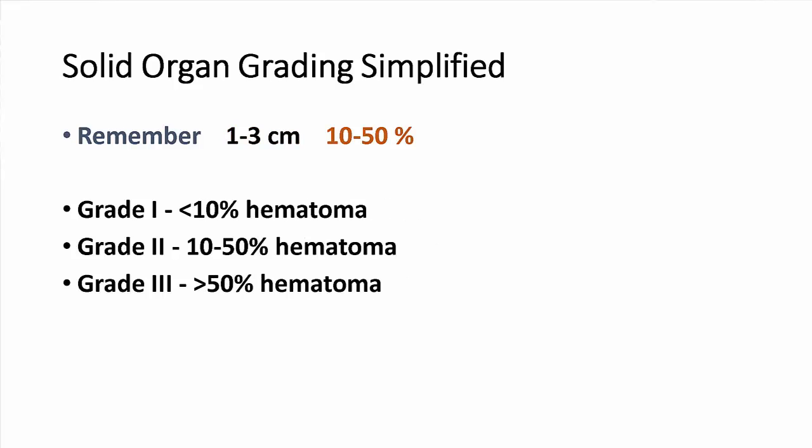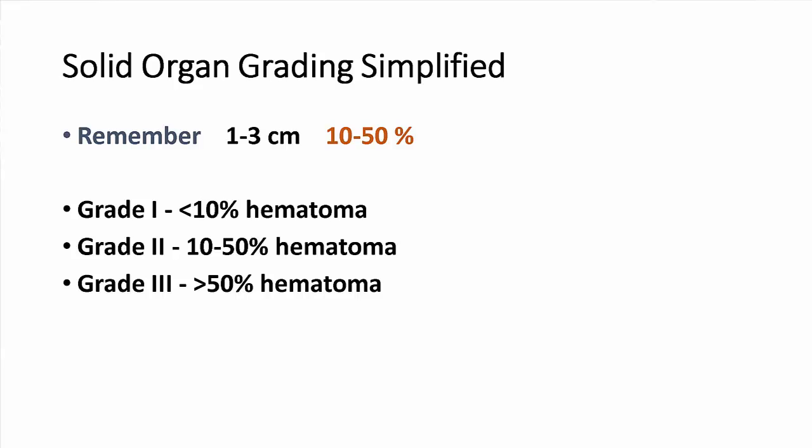Similarly, if you're dealing with a subcapsular hematoma, anything less than ten percent of the total surface of the spleen is a grade one. Anything more than fifty percent is a grade three. And once again, everything in between is a grade two.